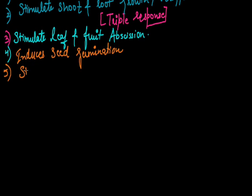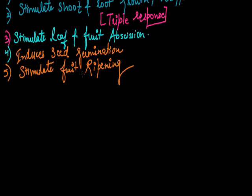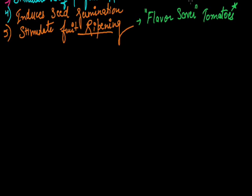Fifth one is it stimulates fruit ripening. The example of fruit ripening we can discuss is in biotechnology we develop Flavor Savr tomatoes, which do not get spoiled through biotechnology. We introduce a gene into it so they cannot easily get spoiled during transportation. So in the Flavor Savr tomatoes, fruit ripening can be induced with the help of ethylene. The next function is it induces femaleness in dioecious plants.